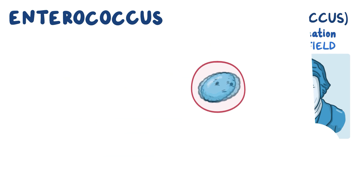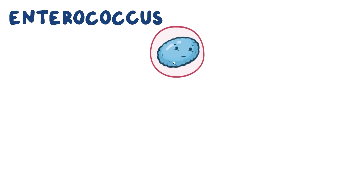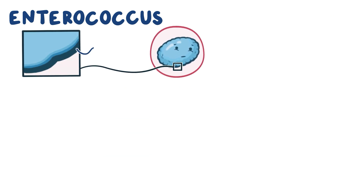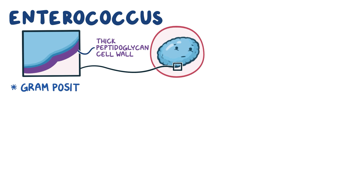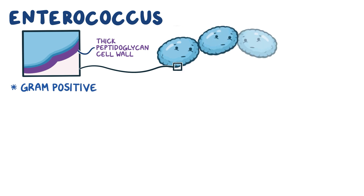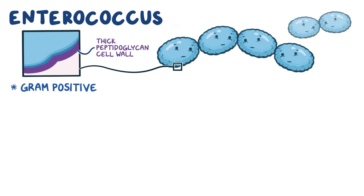Looking at an individual bacterium, Enterococcus has a thick peptidoglycan cell wall, which takes in purple dye when gram-stained, so this is a gram-positive bacteria. When there's more of them, enterococci grow in short chains, usually in pairs.